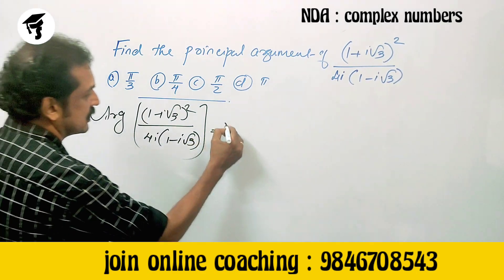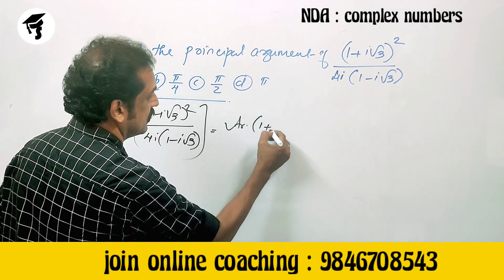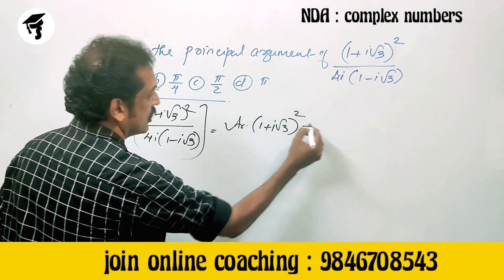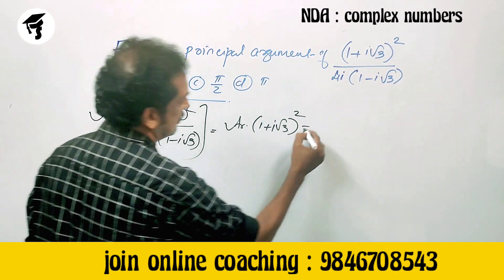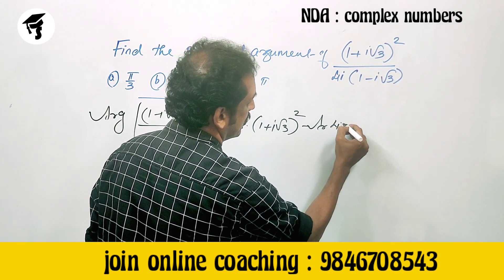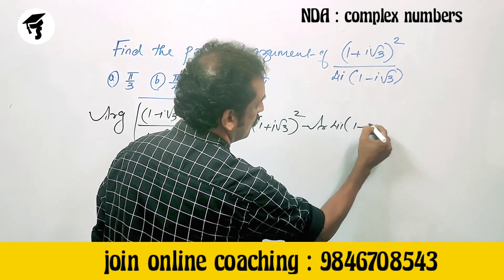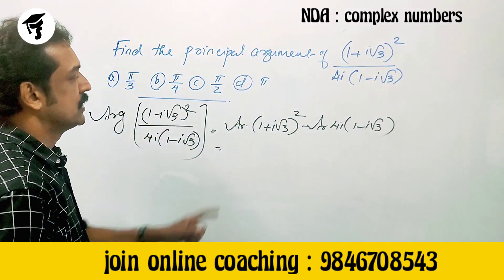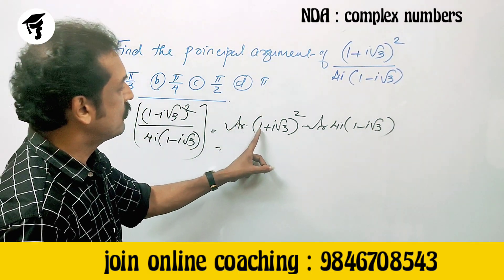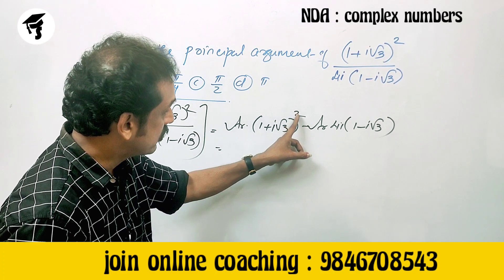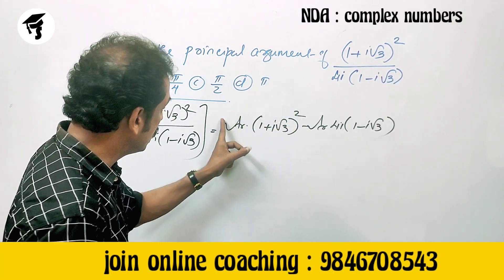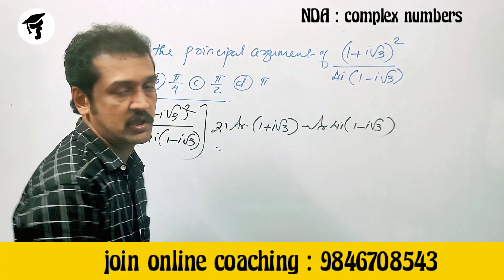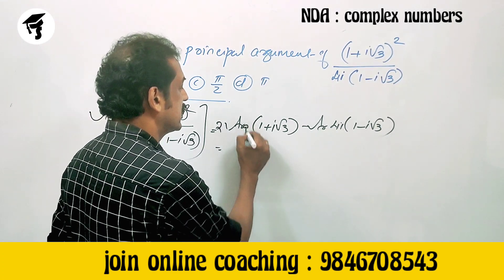That is: argument of (1 + i√3)² minus argument of 4i into (1 - i√3). The argument of (1 + i√3)² equals 2 times the argument of (1 + i√3), so this can be written as 2 into argument of (1 + i√3).